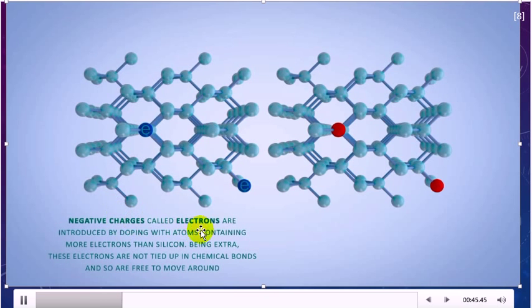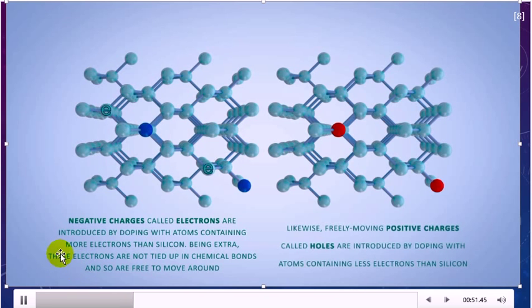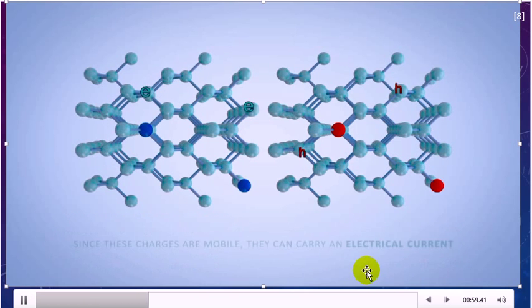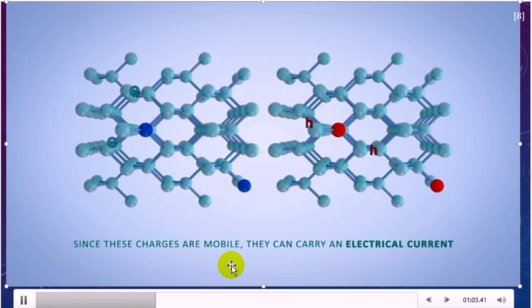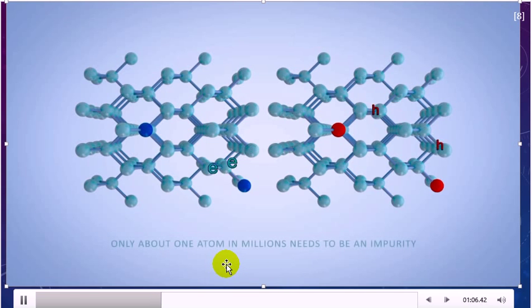Negative charges called electrons are introduced by doping with atoms containing more electrons than silicon. Being extra, these electrons are not tied up in chemical bonds and so are free to move around. Likewise, free-moving positive charges called holes are introduced by doping with atoms containing fewer electrons than silicon. Since these charges are mobile, they can carry an electrical current. Only about one atom in a million needs to be an impurity.